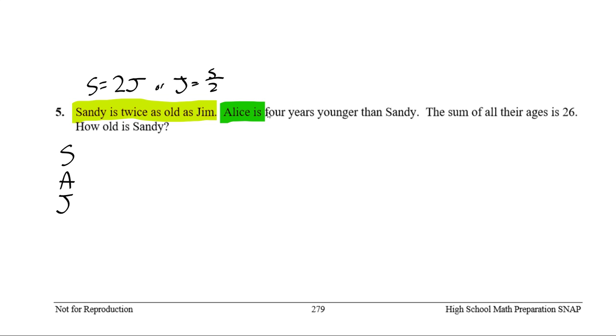Next, they tell us Alice is 4 years younger than Sandy. So we can write this out two ways. We can say Alice's age is Sandy's age minus 4, or we could write this out as Sandy's age is equal to Alice's age plus 4. Those both mean the same thing. The sum of all their ages is 26. So this last bit here, if we take Alice's age plus Sandy's age plus Jim's age, we should get 26.